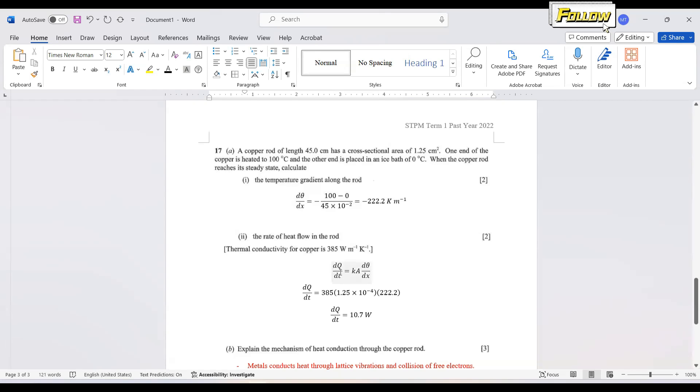So remember the equation that the rate of heat flow is proportional to the area and also proportional to the temperature gradient. So we have this equation dQ/dt equals kA dθ/dx if you don't remember the equation. So we have all the values here. The k is 385, thermal conductivity. Area is given and remember to convert it into meter squared. And then the temperature gradient. So the final answer is 10.7 watts.